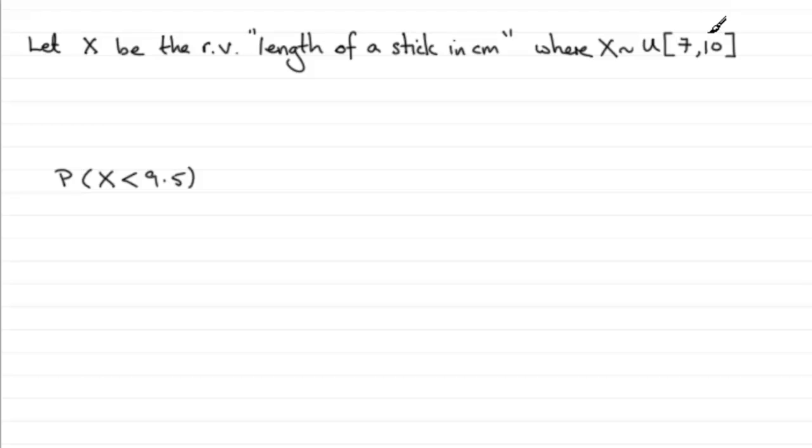A stick is selected at random from the box, and we need to find the probability that the stick is shorter than 9.5 centimeters.